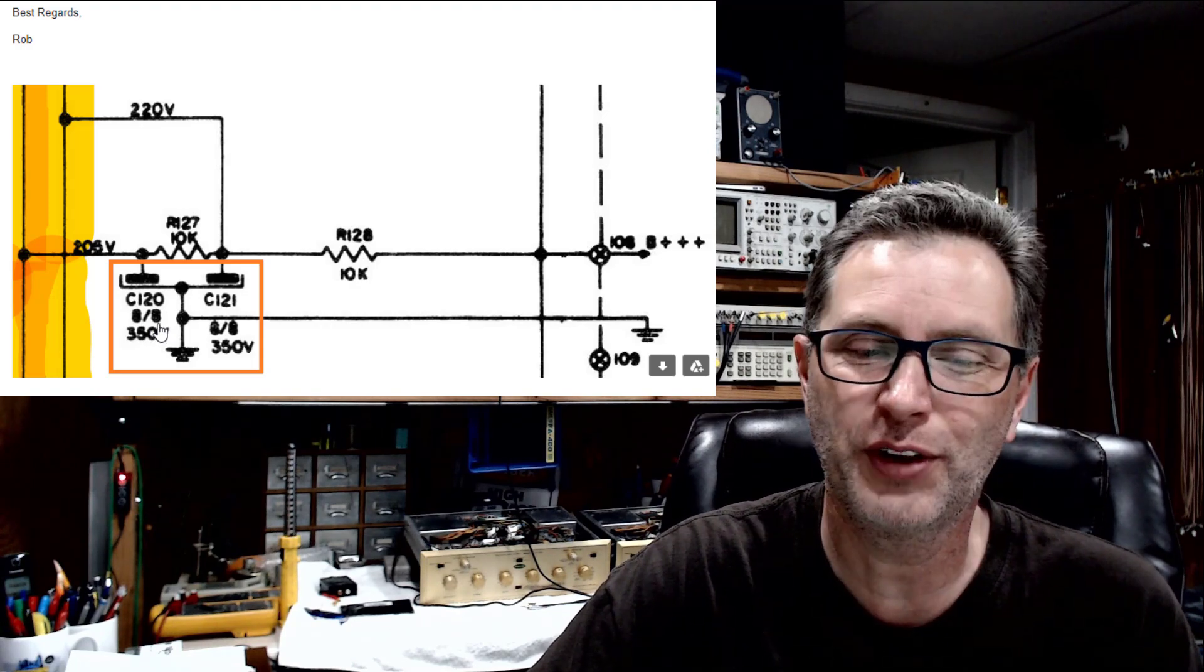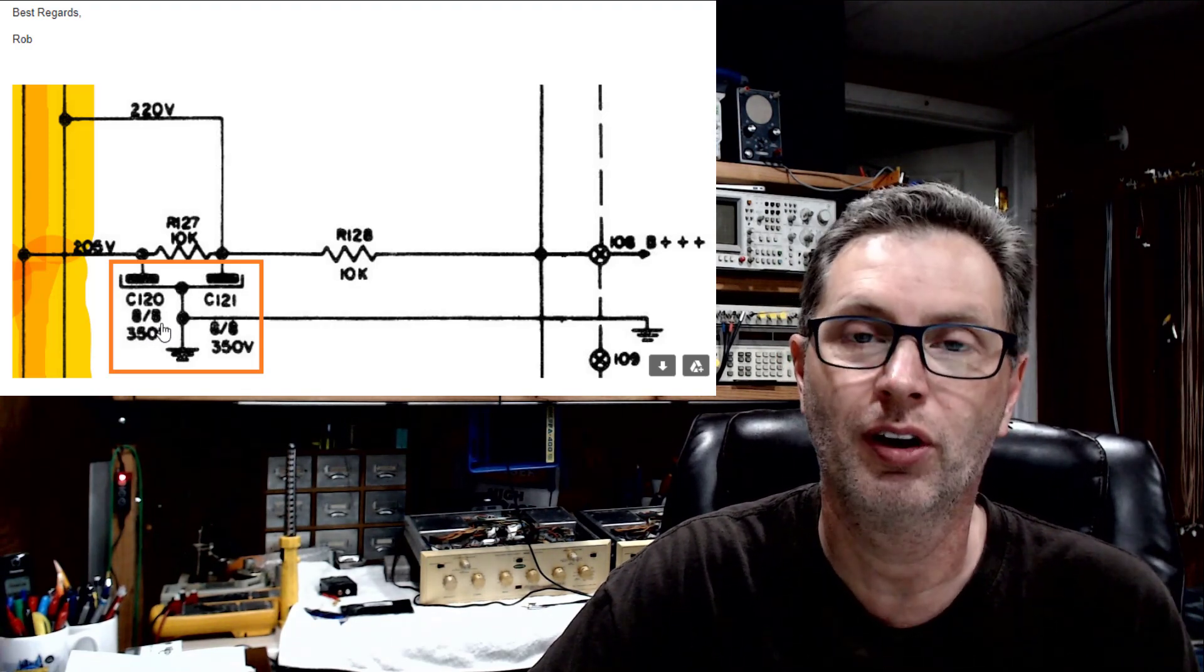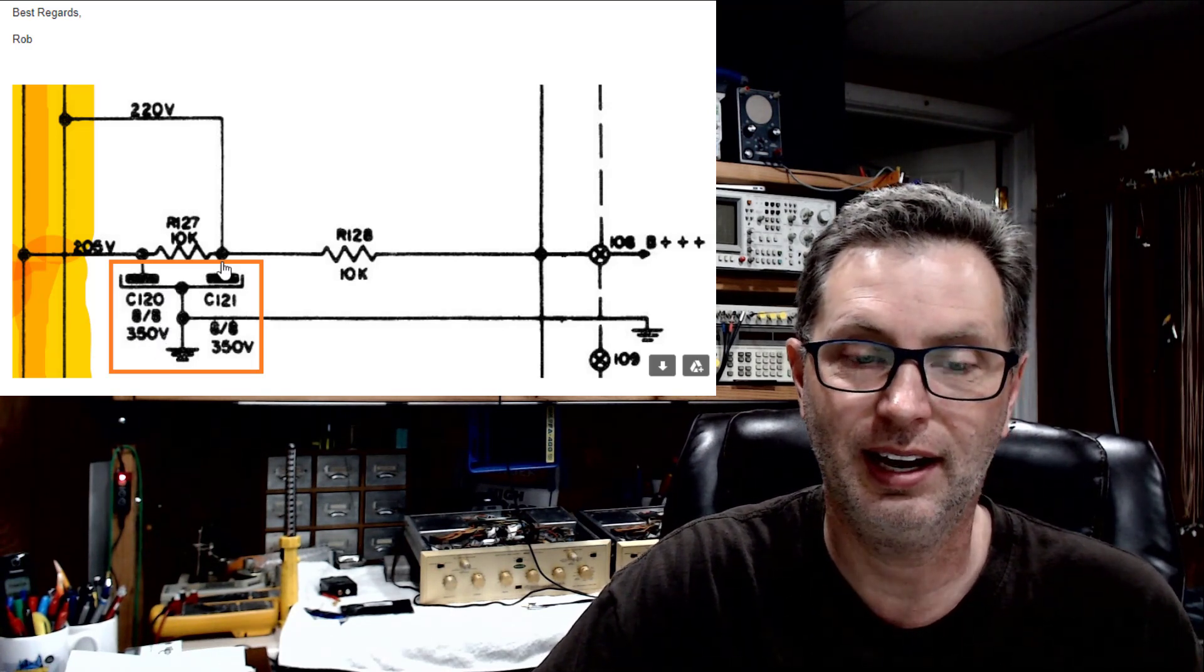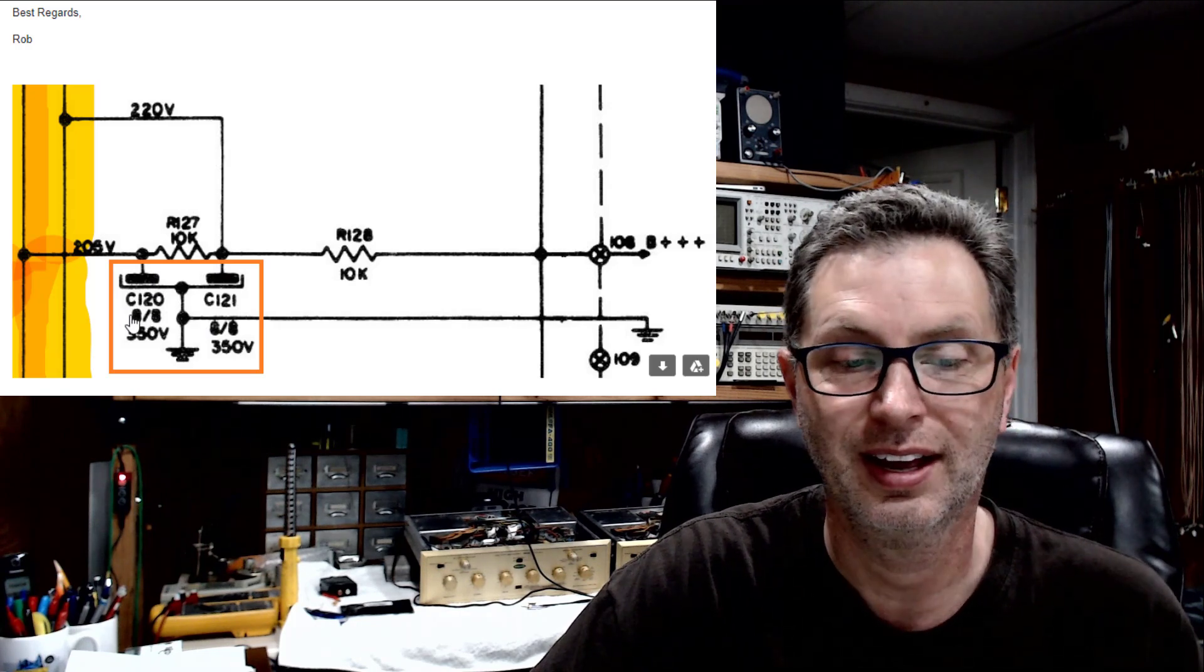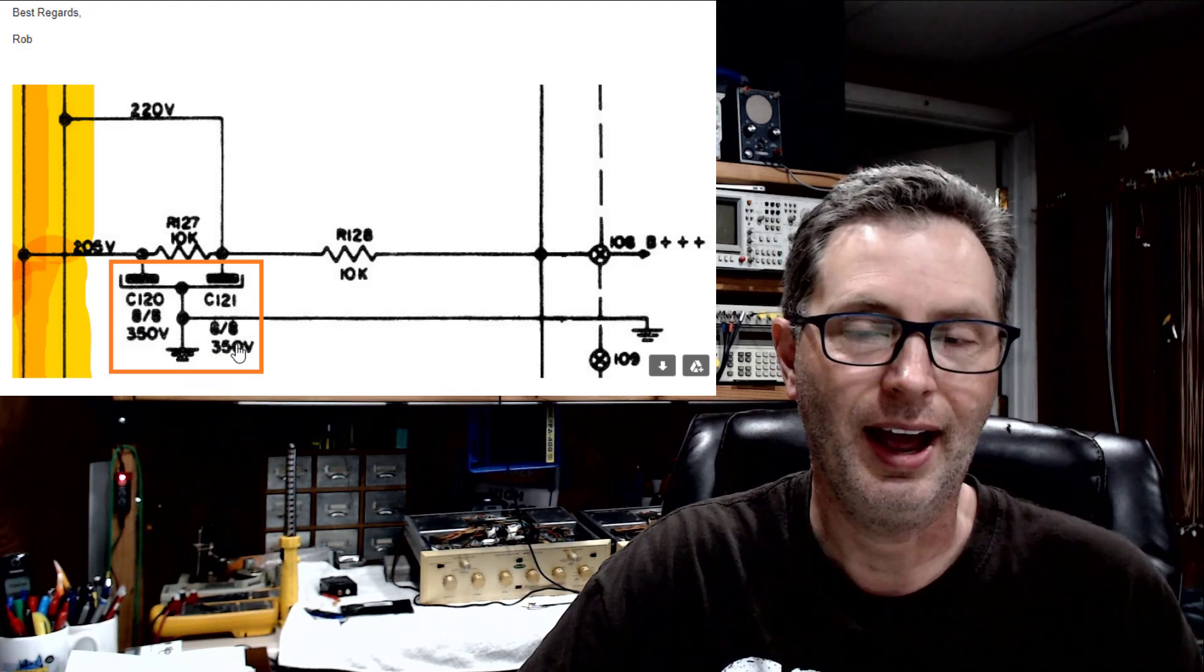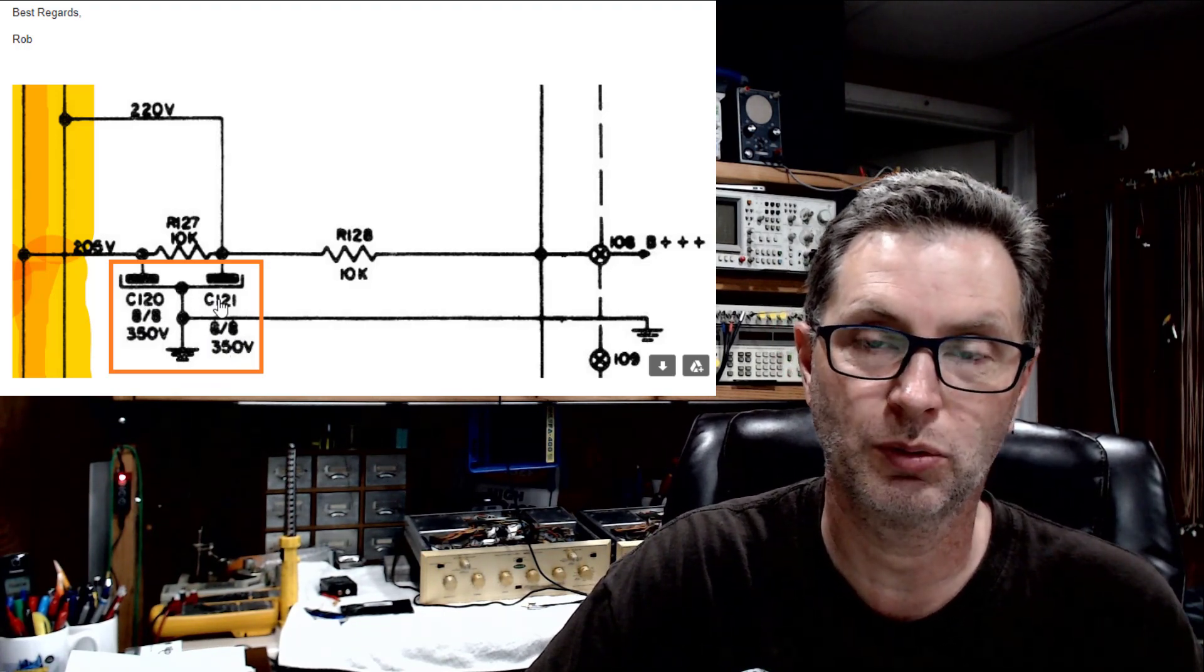Because what they're really saying is both sides of this capacitor are 8 microfarad. So this is an 8 microfarad side, this is an 8 microfarad side. And why they showed that versus just showing 8 microfarad and 8 microfarad here, I'm not sure. But that's what you've got: C120 is 8 microfarad, C121 is 8 microfarad.